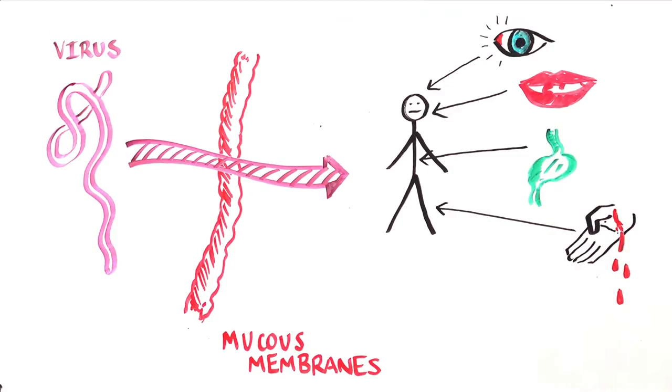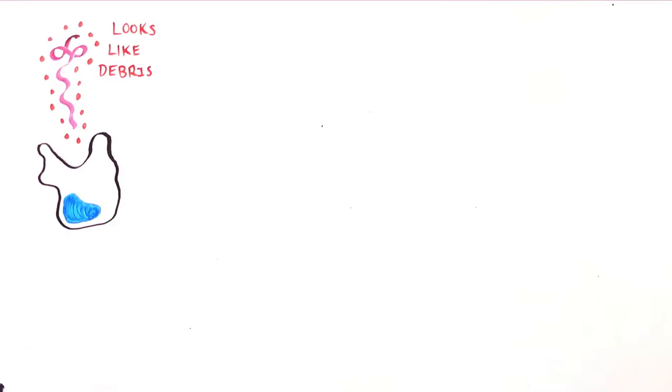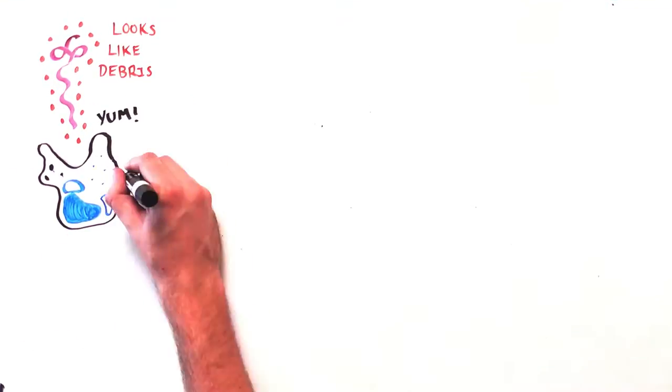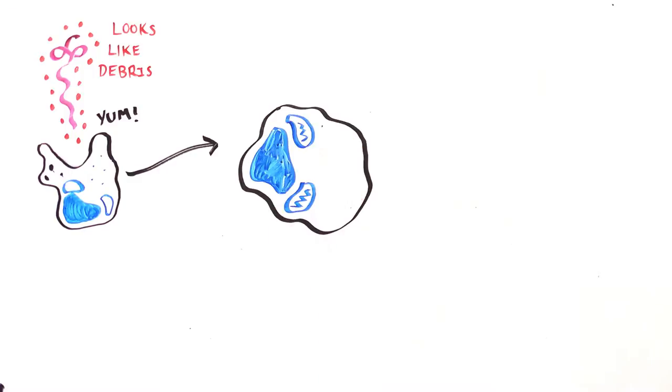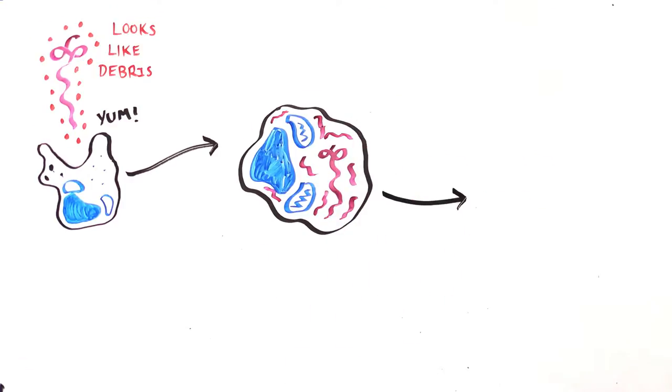The virus is surrounded by small proteins that disguise it as a piece of debris. Cells of the immune system that are in charge of cleaning up debris take up the virus, thinking they're doing their job. But once inside, the virus removes its disguise.